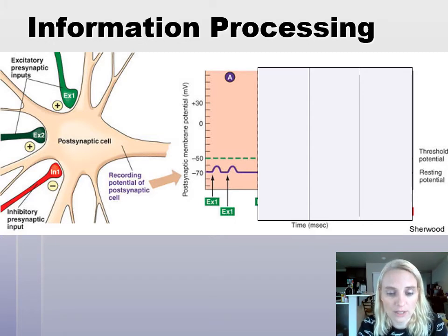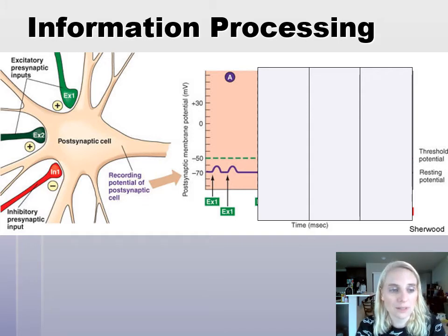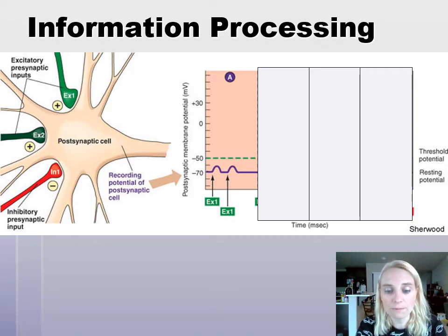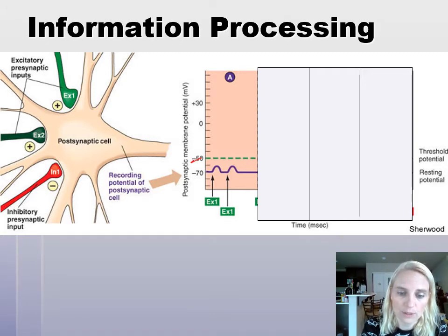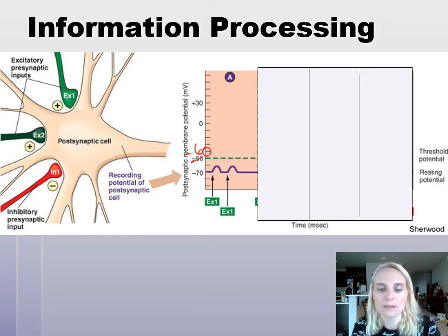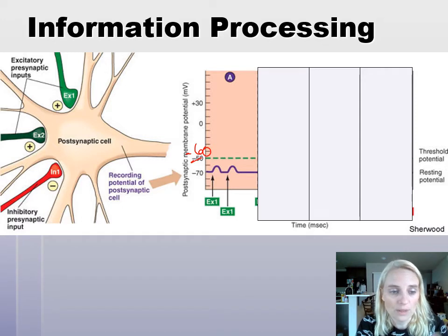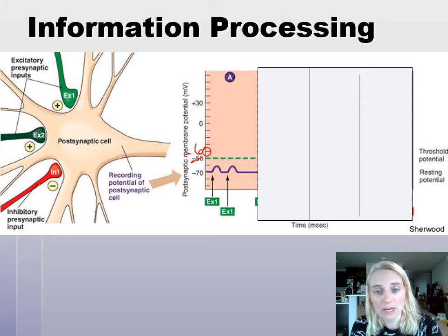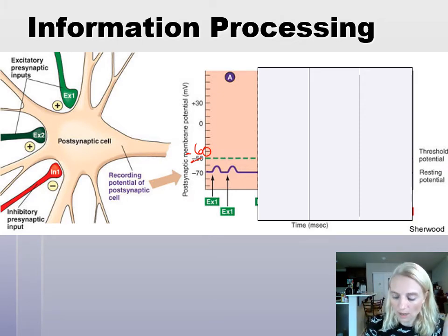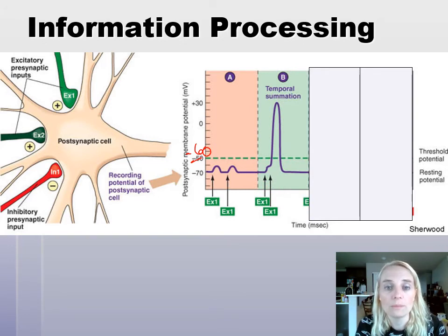Looking at the diagram, we have excitatory presynaptic cell EX1 in light green. If EX1 fires by itself, we can see it does not reach threshold — threshold is negative 60 in our book. So the synapse with excitatory presynaptic neuron number one all by itself doesn't do anything. Then a little time goes by, another one comes in — and it doesn't do anything either.